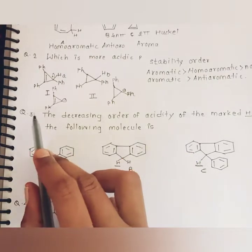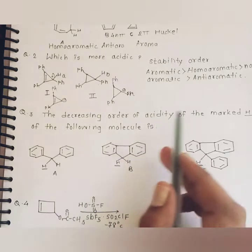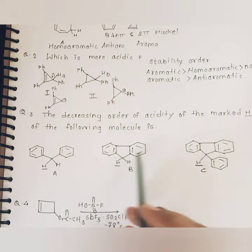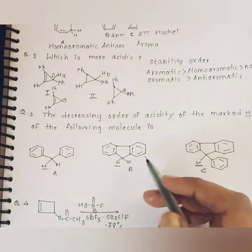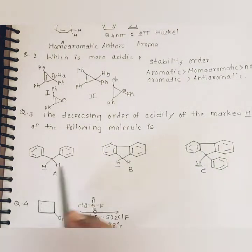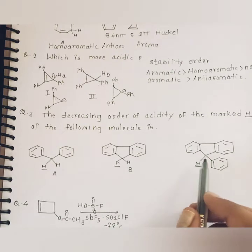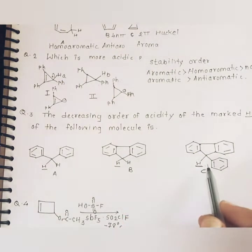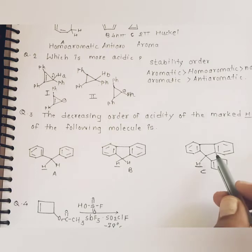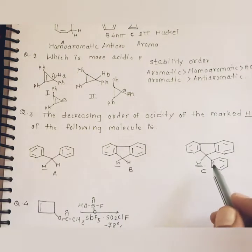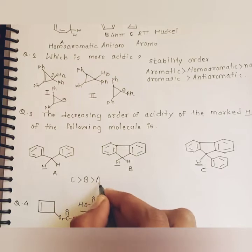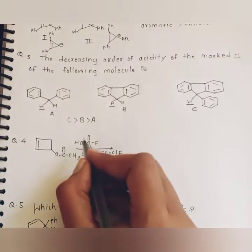Question three: the decreasing order of acidity of the marked hydrogen among compounds A, B, and C. B and C are more acidic because after deprotonation, aromatization of the ring results. Therefore they are more acidic compared to A. Among B and C, C is more acidic because after deprotonation, the carbanion formed is more stabilized. Therefore the order is: C is more acidic than B, which is more acidic than A.